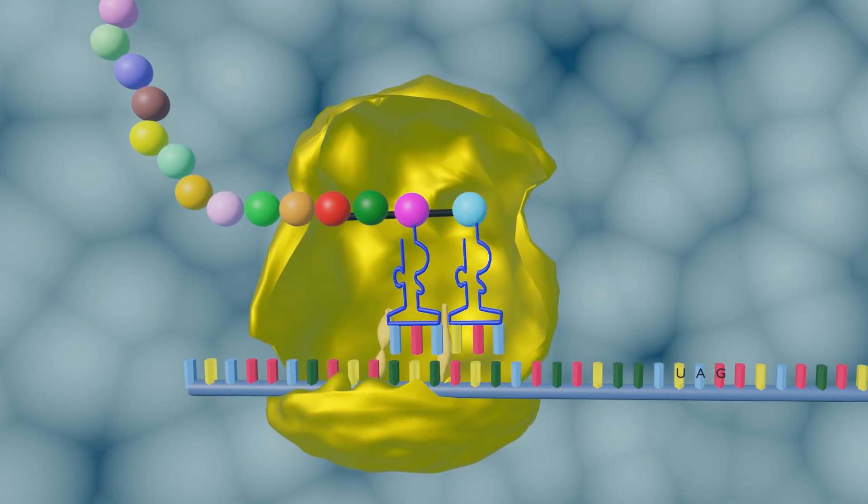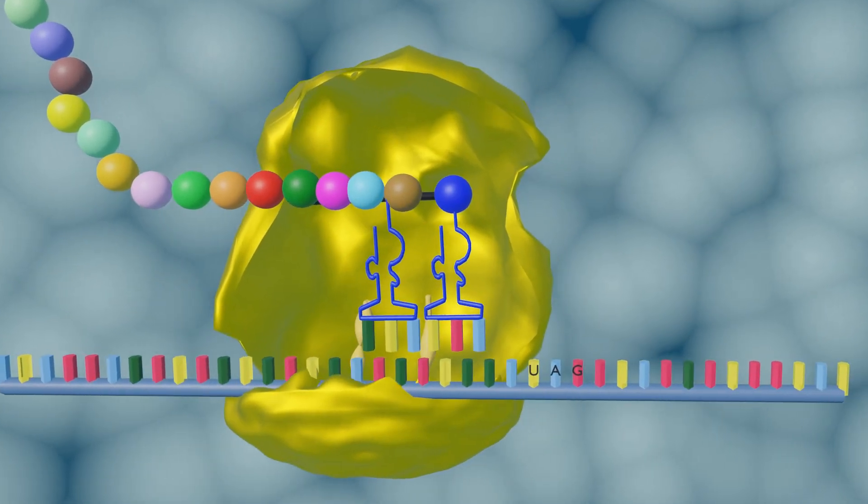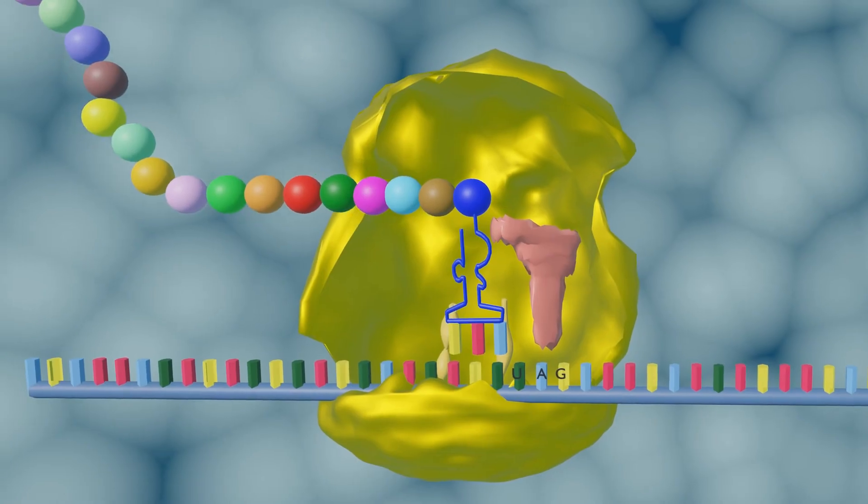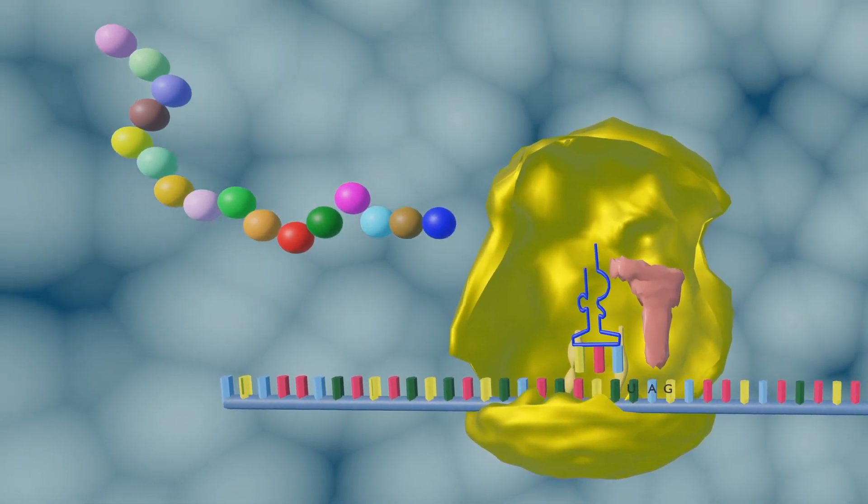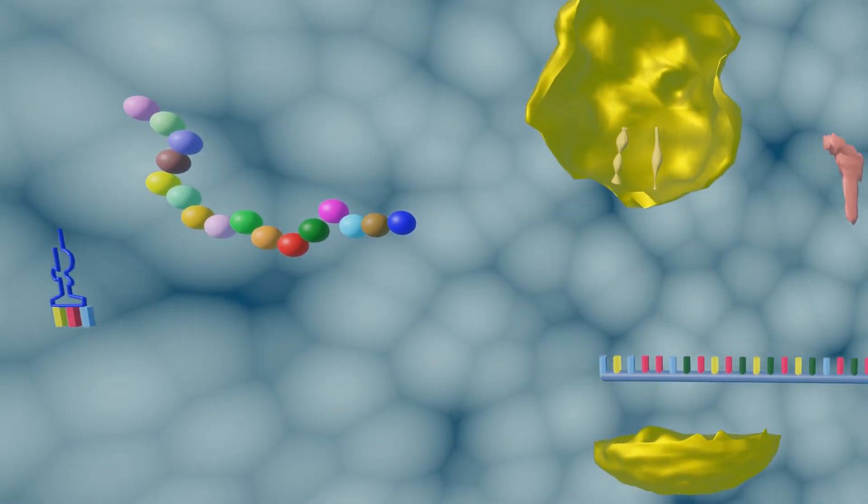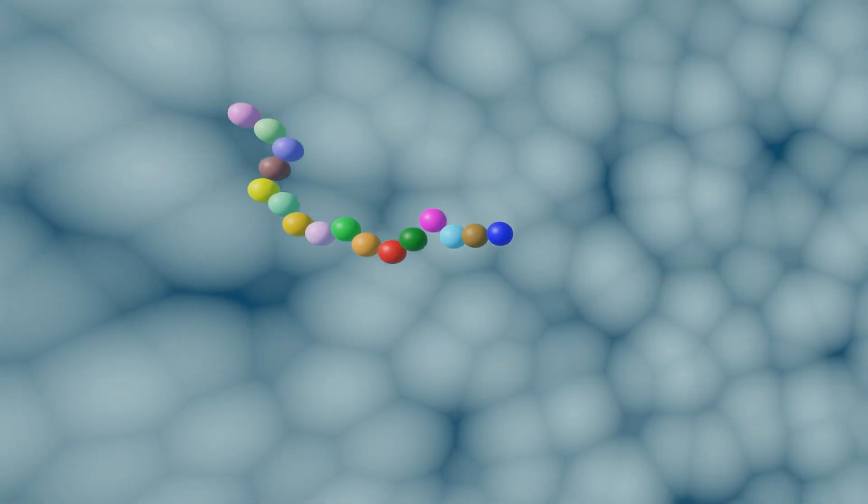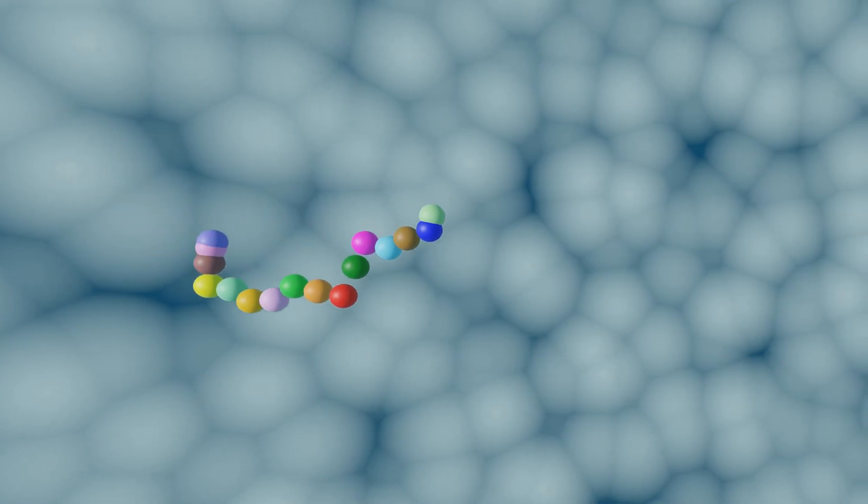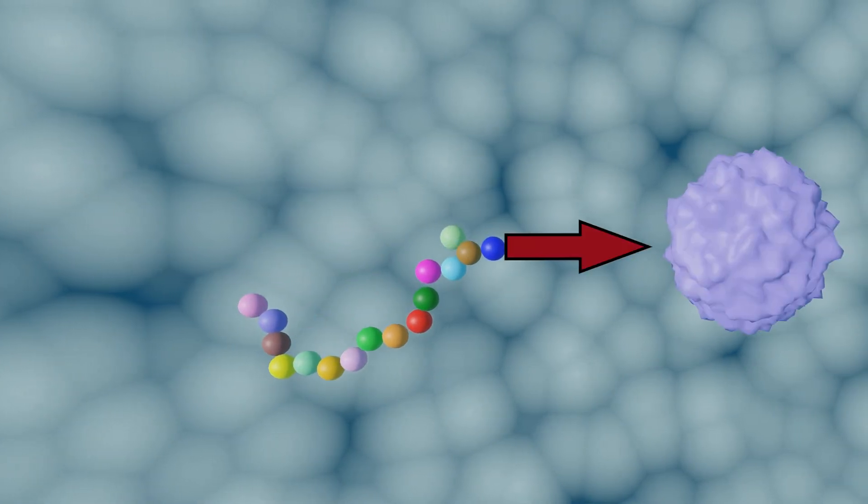Elongation will continue until a stop codon is reached. The stop codon signals a release factor to bind to the A site. The polypeptide chain is released from the transfer RNA. The entire complex dissociates and can reassemble to begin the process again. The polypeptides need to be modified and folded into complex structures before they are ready to function.